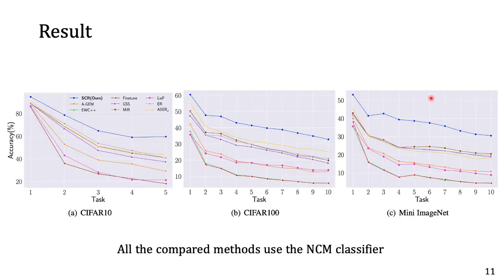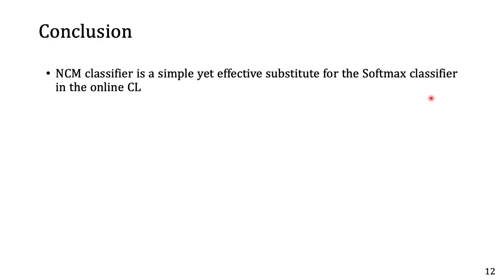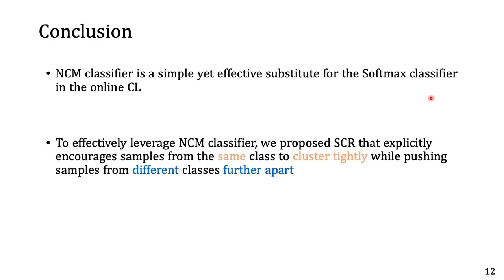With the supervised contrastive loss and the NCM classifier, SCR shows strong performance compared to the baselines on three different datasets. In conclusion, we found that the NCM classifier is a simple but very effective substitute for the softmax classifier in online continual learning, and we advocate using it in future research. We also propose SCR, which explicitly encourages samples from the same class to cluster tightly while pushing samples from different classes further apart.